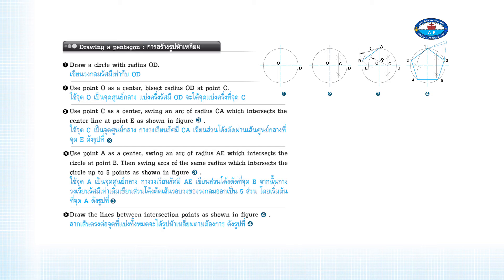Drawing a Pentagon. Draw a circle with radius OD. Use point O as a center. Bisect radius OD at point C.